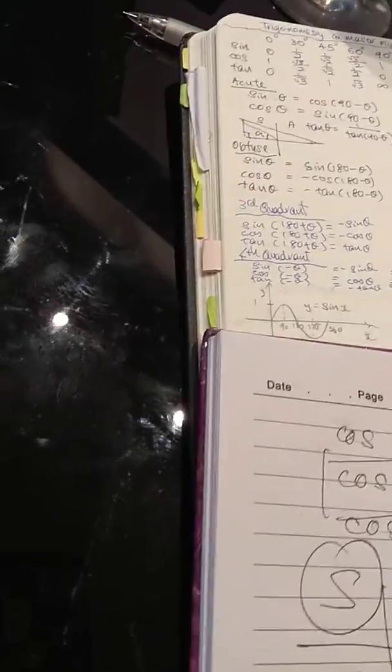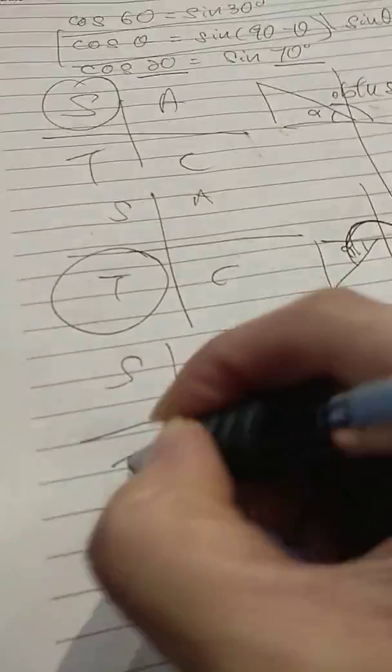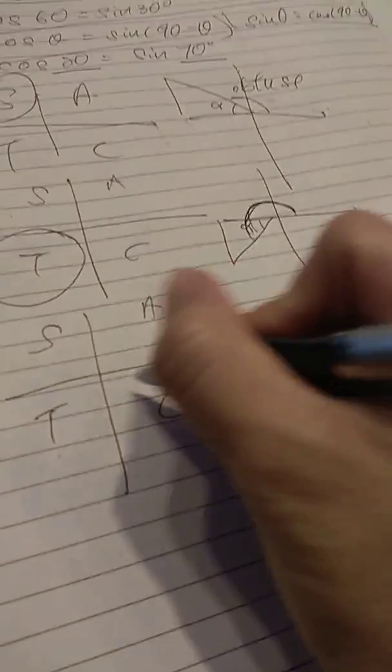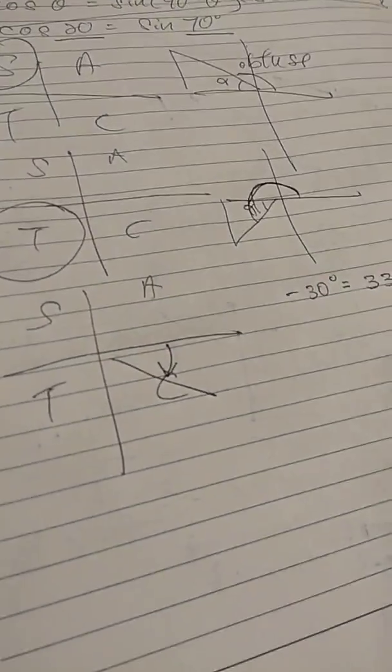So now we look at the fourth quadrant. Fourth quadrant is here. ASTC. If we have minus 30 degrees, it's the same as 330 degrees. Minus 30 means go this way.